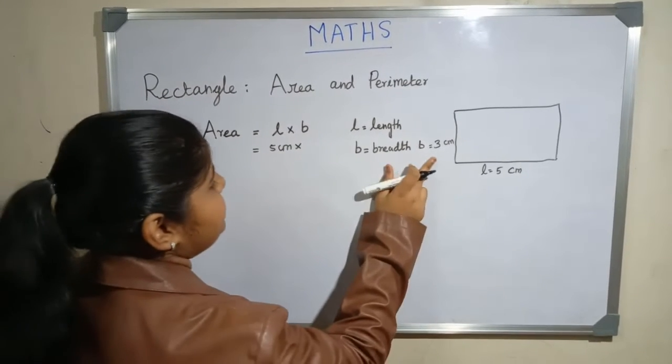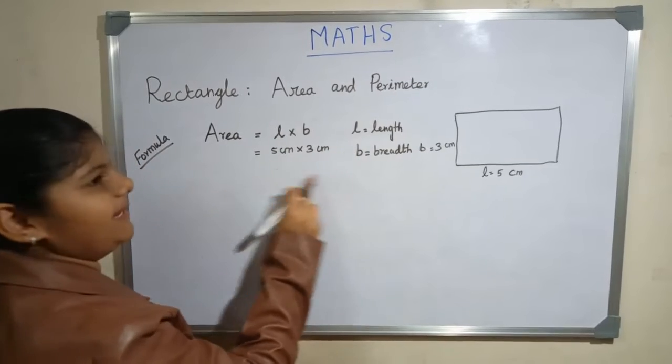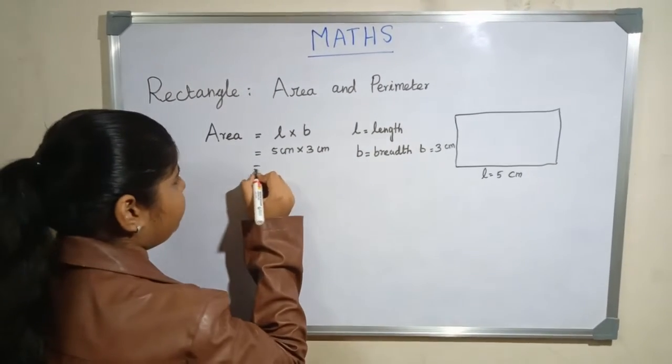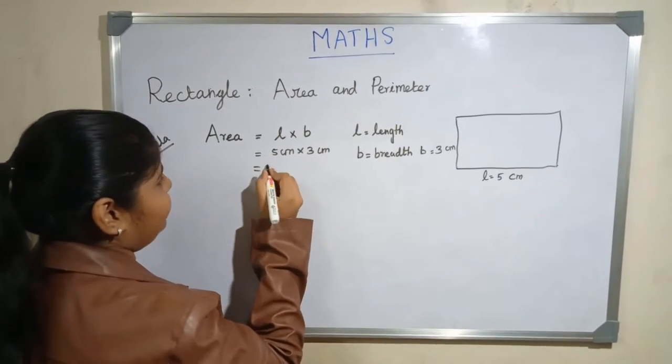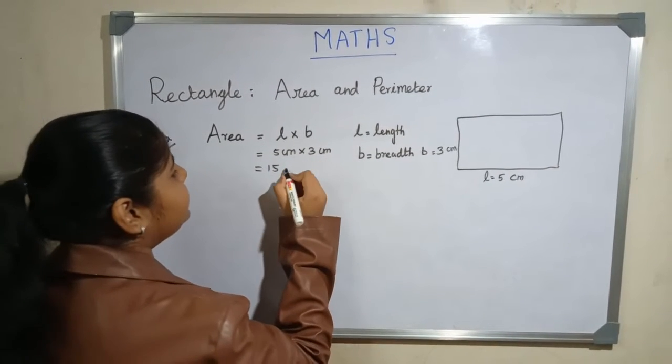Breadth is 3 centimeters. Now we have to multiply both numbers: 5 times 3 is 15. Centimeter times centimeter is centimeter square, so the answer is 15 centimeter square.